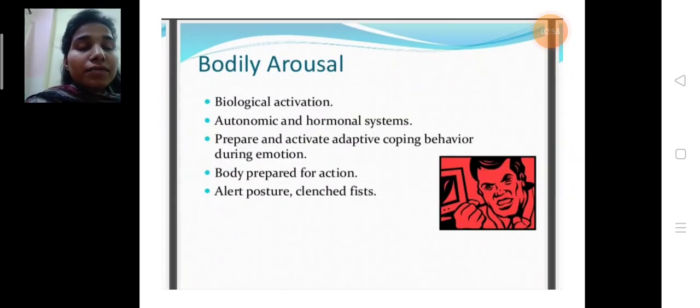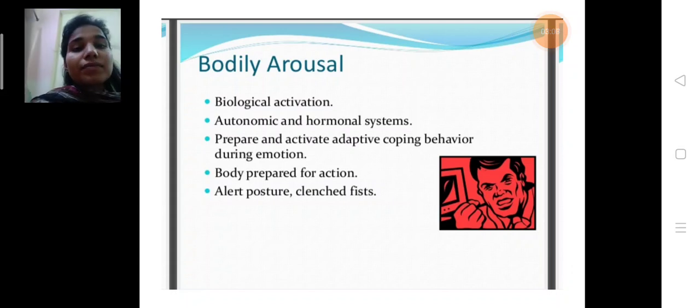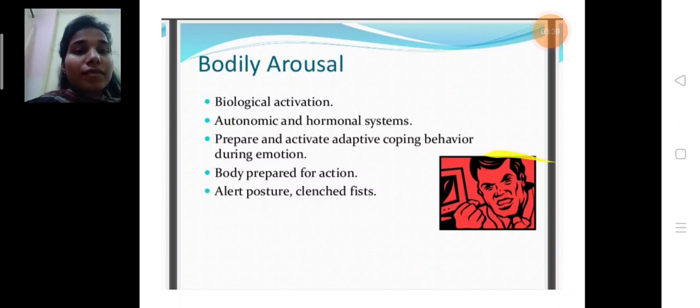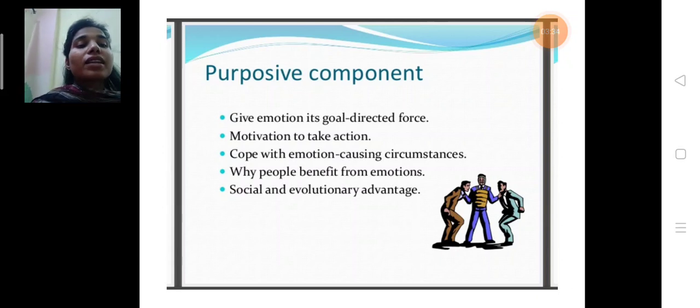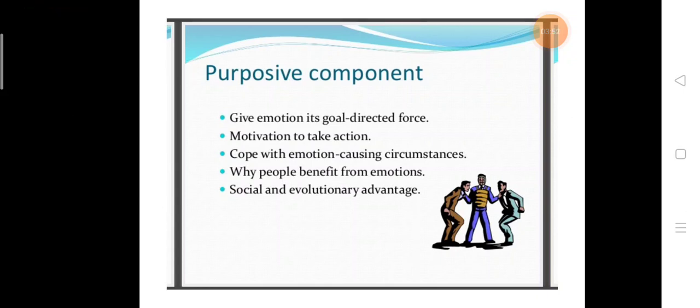Bodily arousal - biological activation, autonomic and hormonal systems prepare and activate adaptive coping behavior during emotion. Body prepared for action, alert posture and clenched fists to cope with emotion causing circumstance.